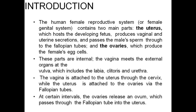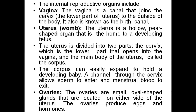At certain intervals, the ovaries release an ovum which is passed through the fallopian tube into the uterus. The internal reproductive organs include the vagina, which is a small canal that joins the cervix to the outside of the body, also known as the birth canal. The uterus, otherwise known in common language as the womb, is a hollow pear-shaped organ that is the home to the developing fetus. The uterus is divided into two parts: the cervix, which is the lower part that opens into the vagina, and the main body of the uterus called the corpus. The corpus can easily expand to hold the developing baby. A channel through the cervix allows sperm to enter and menstrual blood to exit.